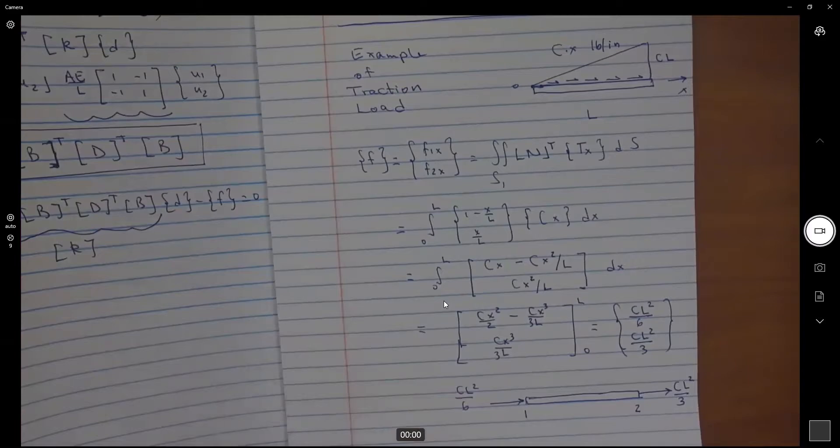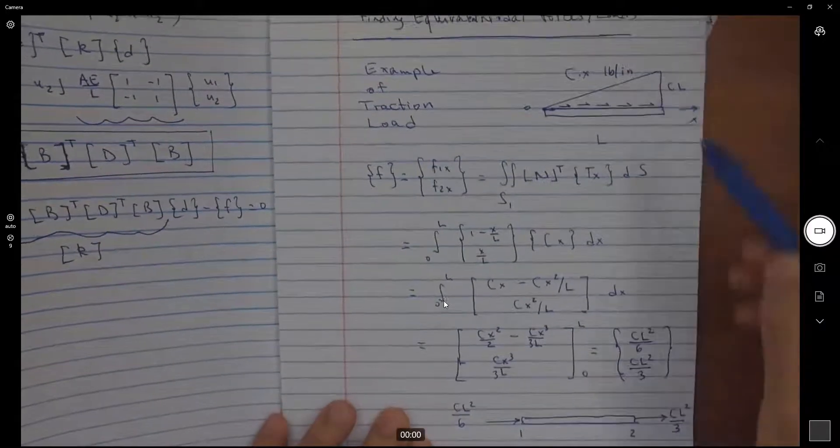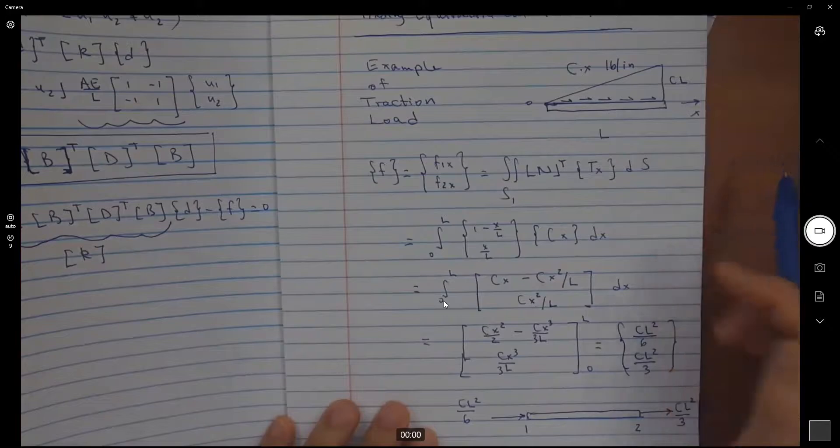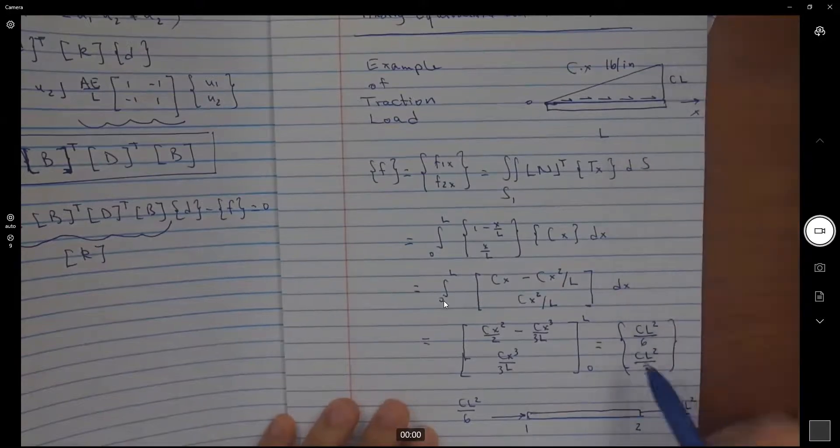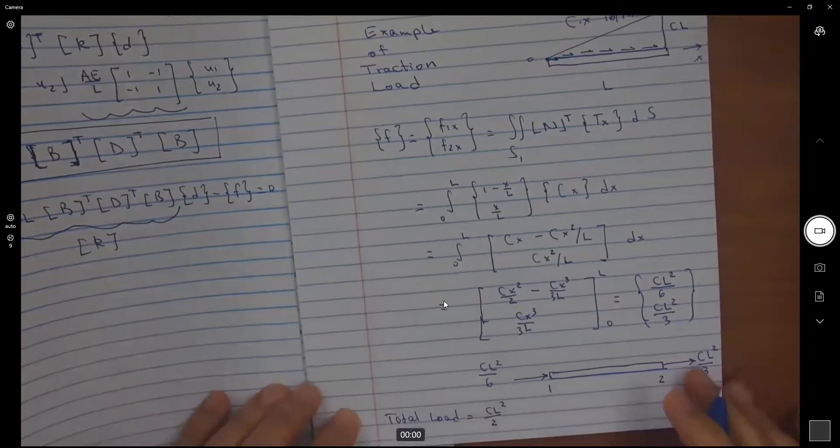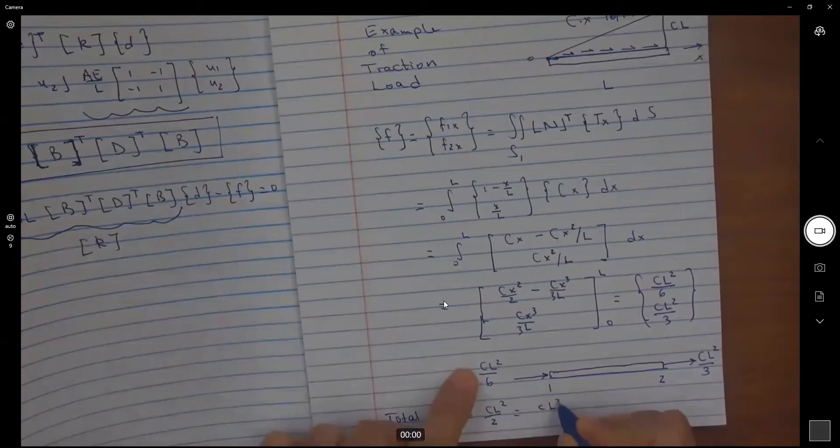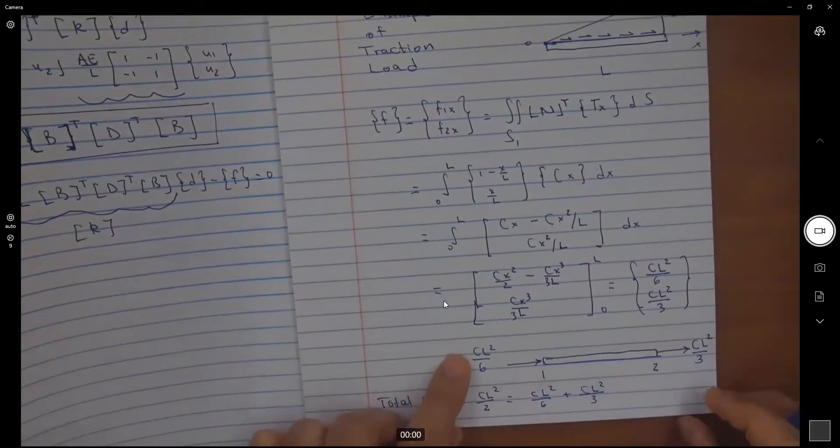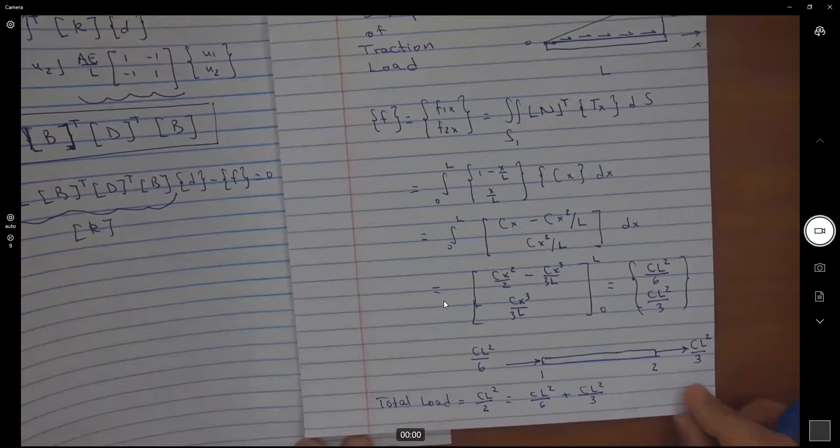Now remember, these equivalent nodal forces have to be statically equivalent to the actual force. If you look at the actual force, what is the magnitude of it? We get cL times L over 2, right? So the total load is equal to cL squared over 2, which should be equal to cL squared over 6 plus cL squared over 3. This is the area under the distributed load. This is f1x and this is f2x.